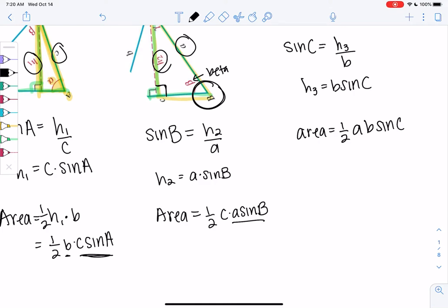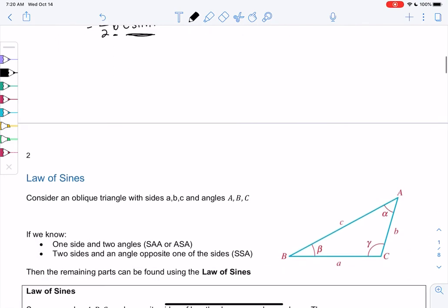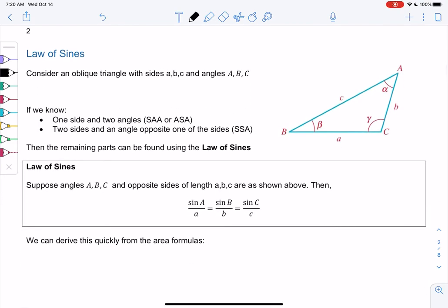But the reason we care about this is this is going to lead us into the law of sines. So this will be useful if you ever need to find area, but we are going to focus on law of sines, which is derived from the area. So the law of sines allows us to solve any triangle, any non-right triangle, any oblique triangle.